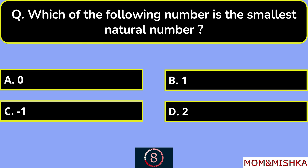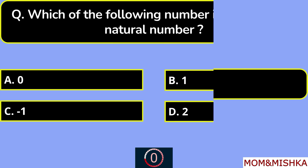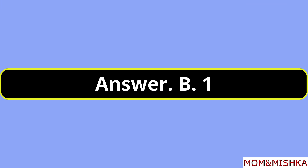Which of the following is the smallest natural number? The answer is 1. Option B.